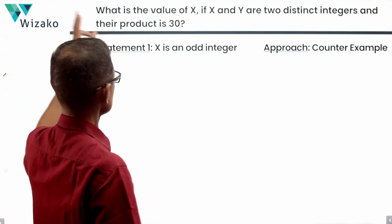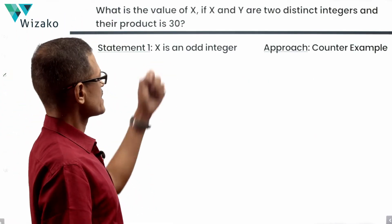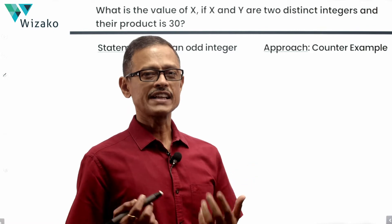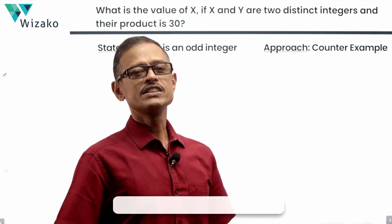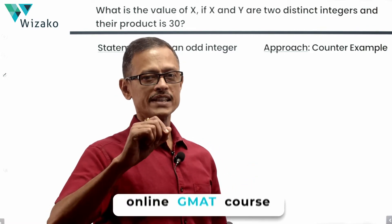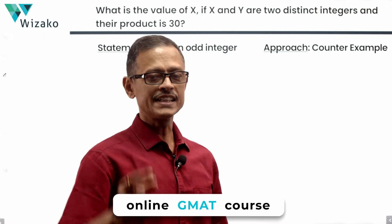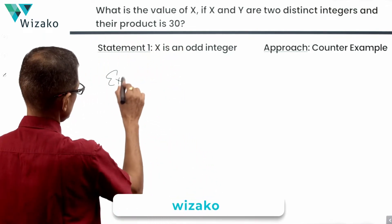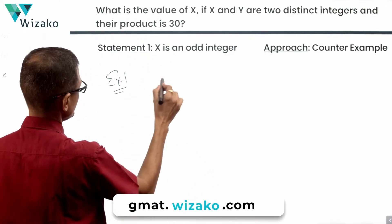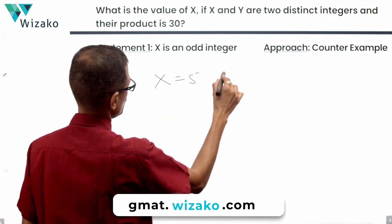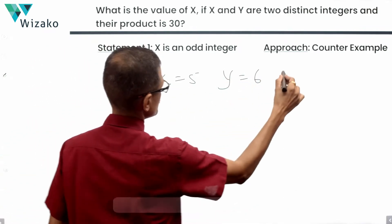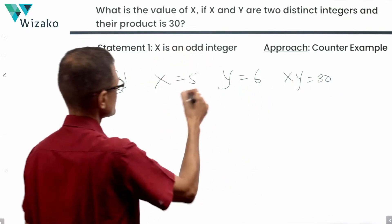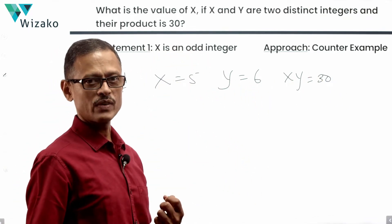Let's look at statement one: x is an odd integer. We'll use a counterexample approach — trying to find more than one value of x that is an odd integer and when multiplied with integer y gives a product of 30. Example one: x = 5, y = 6, x·y = 30, and x is an odd integer. That works.